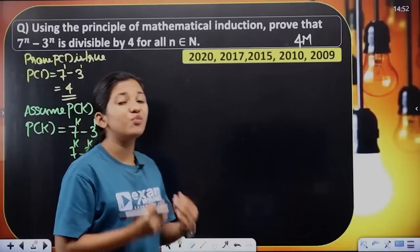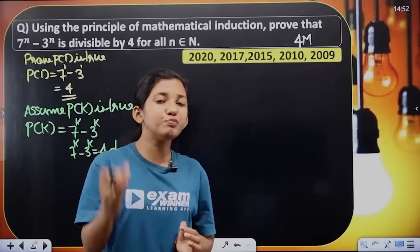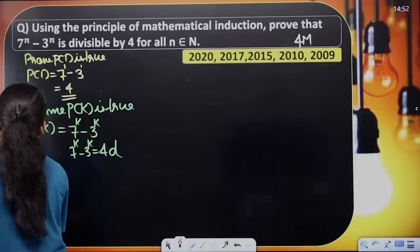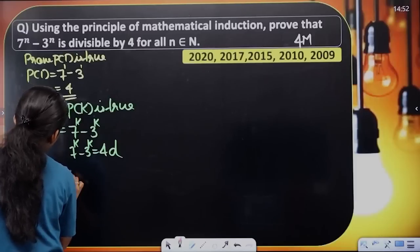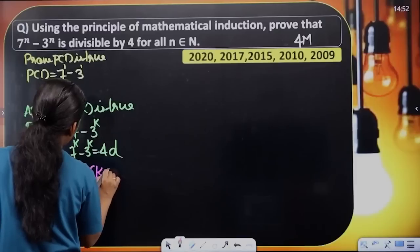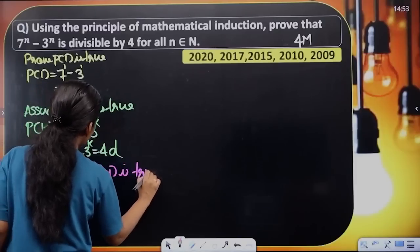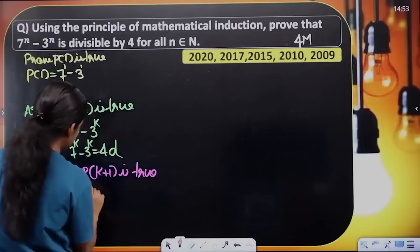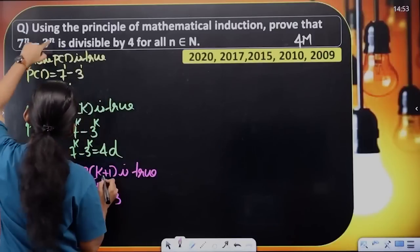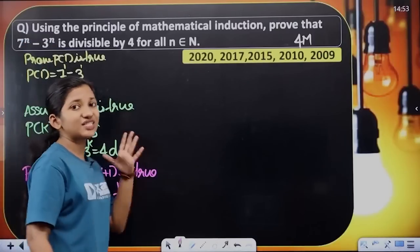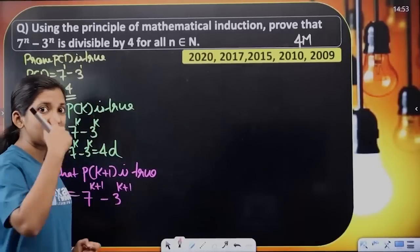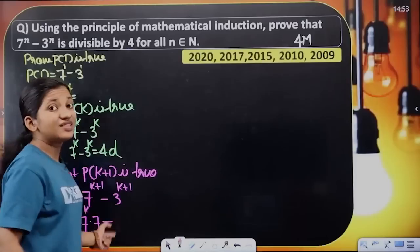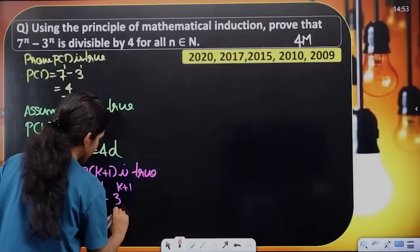In the next step, we will prove P of k plus 1 is true. Third step: to prove P of k plus 1 is true. P of k plus 1 equals 7 raised to k plus 1 minus 3 raised to k plus 1.